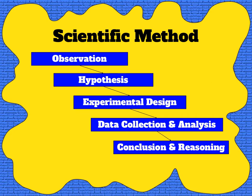Scientists agree there isn't any one way to do scientific inquiry. However, in order to communicate with one another and to make sure that during peer review they have included everything that they need, there are a few things that they've decided need to be a part of experimental design. For this video we have broken this down into five sections.